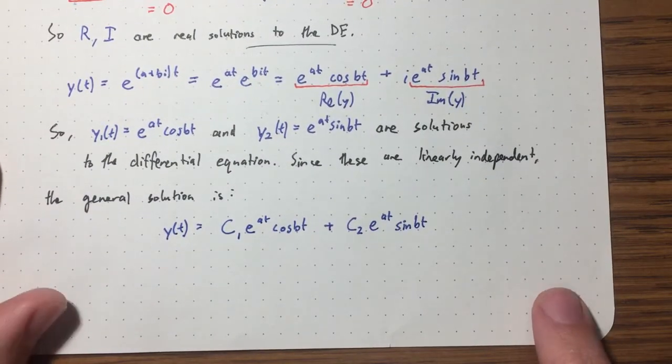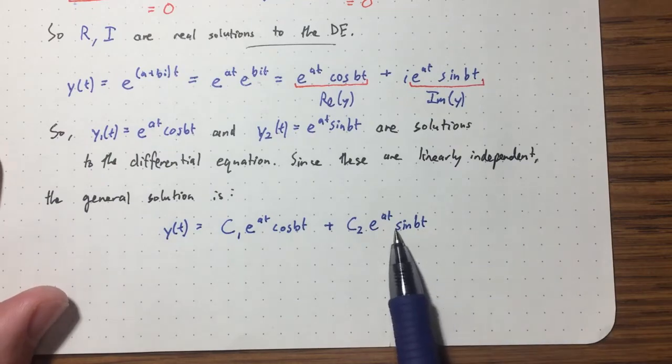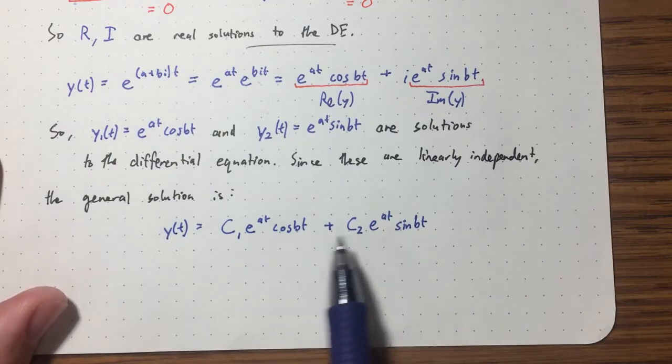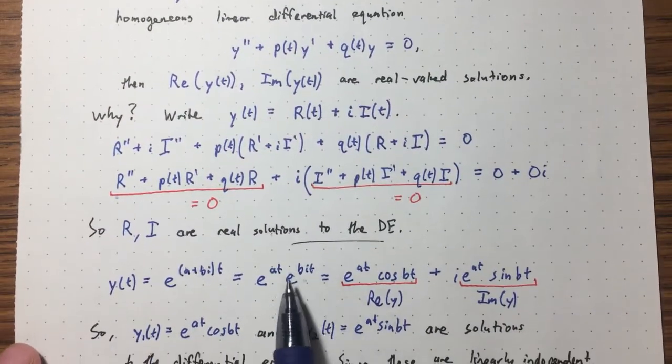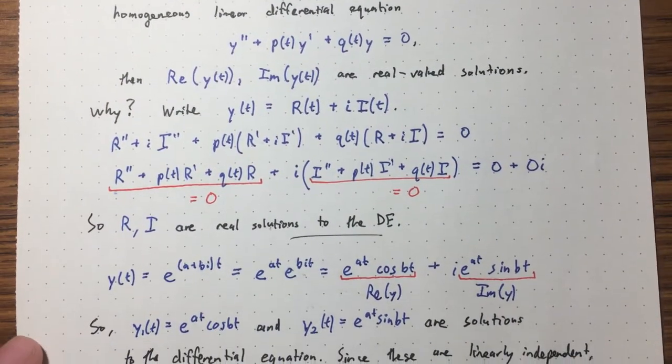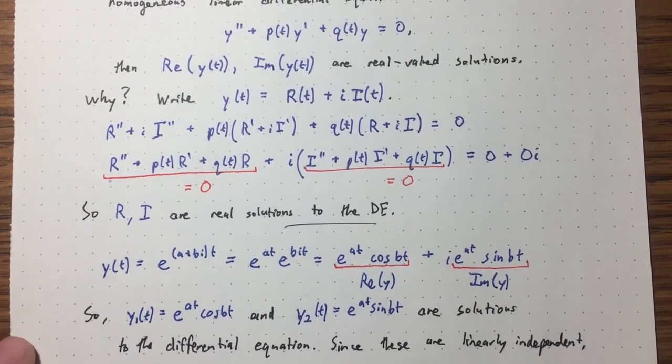This is really beautiful — we get sines and cosines, and this is where they come from. They come from Euler's formula.